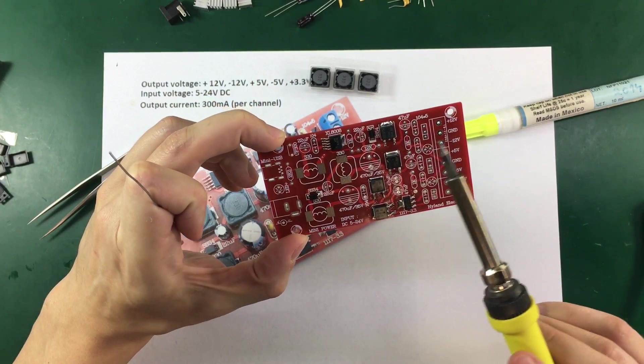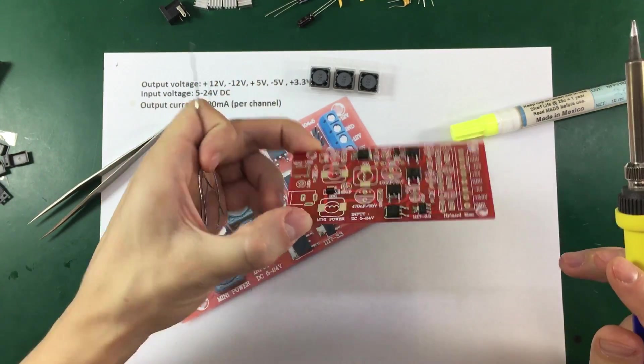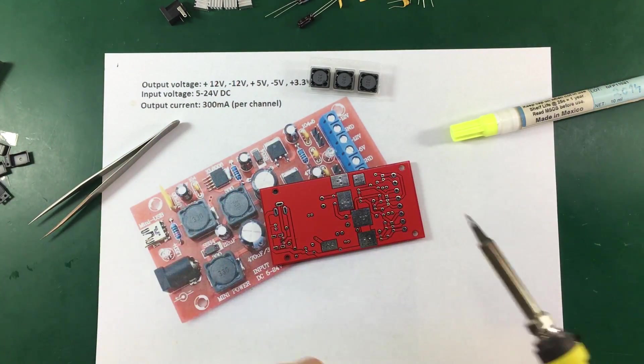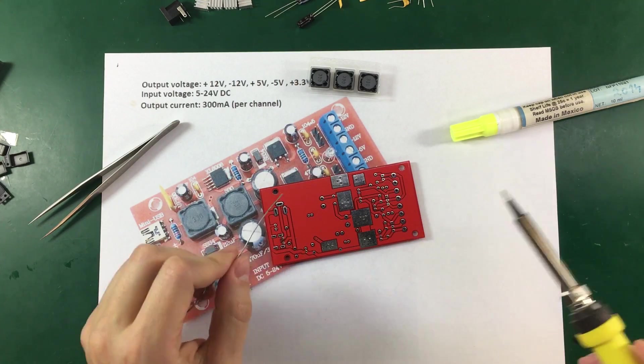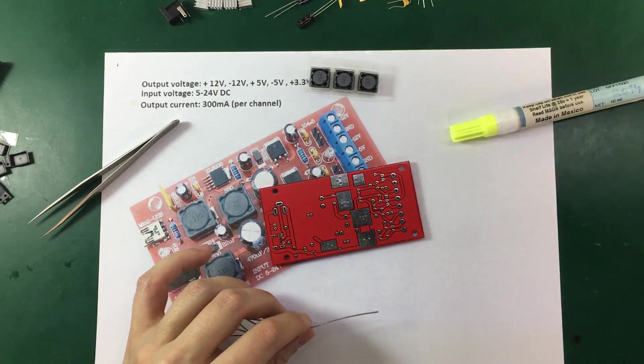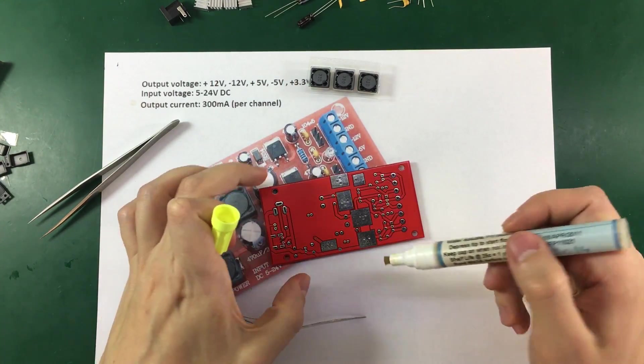Alright so now that I'm done with soldering the top side for these regulators. Let's feed some solder on these pads on the back. First I'm going to apply some flux.